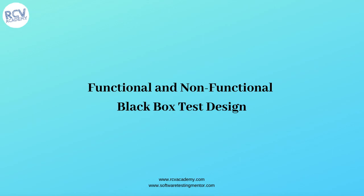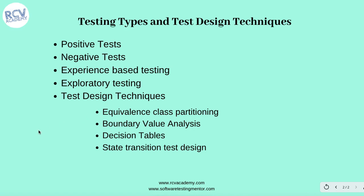If the output meets the expectations, then your test is passed. The black box test design techniques from the ISTQB Foundation Level syllabus — such as equivalence class partitioning, boundary value analysis, decision tables, and state transition test design — are all still valid in agile development approaches. You need to apply these test design techniques to test the user stories coming into the sprints.